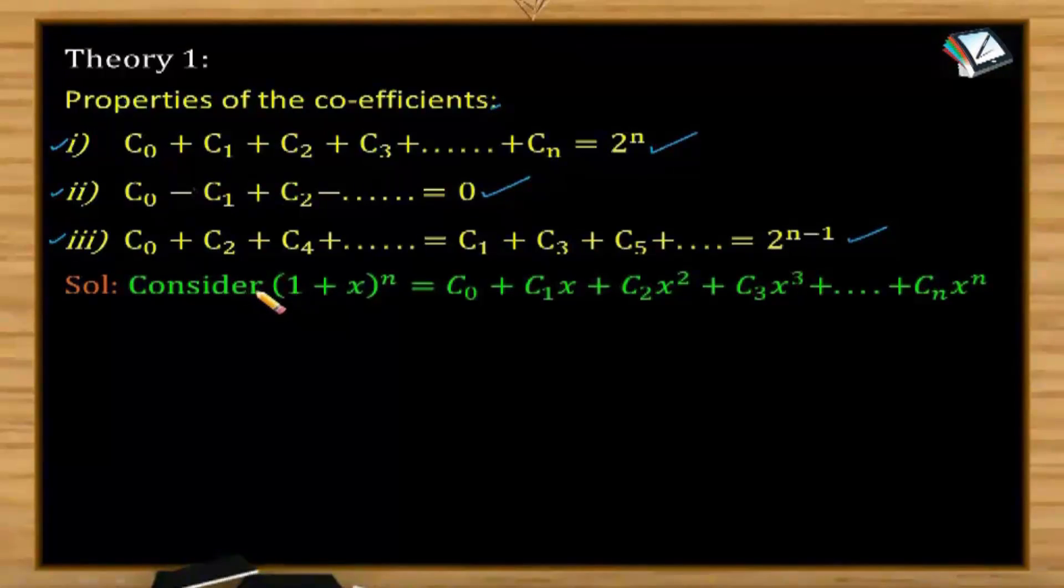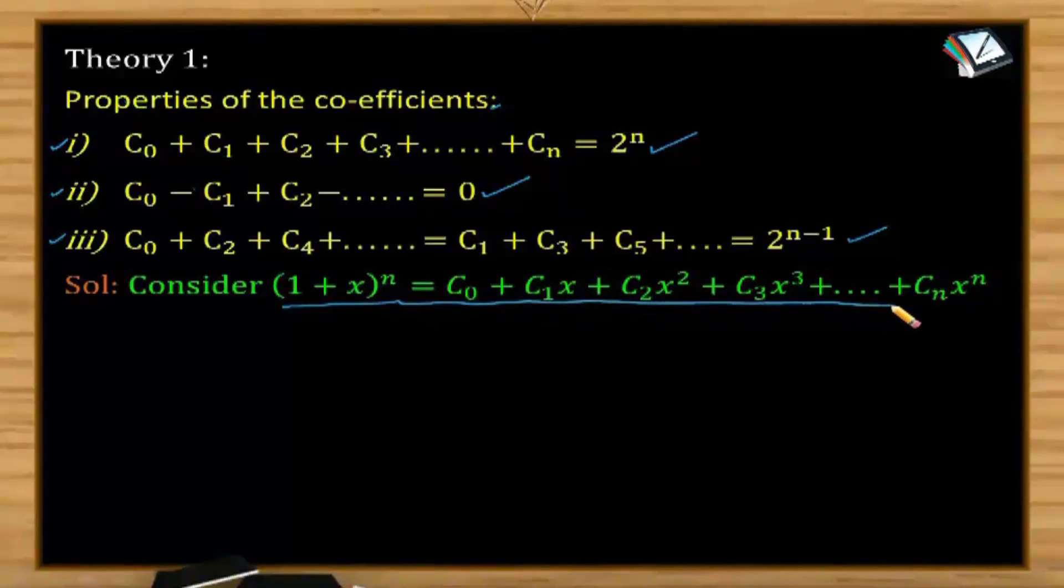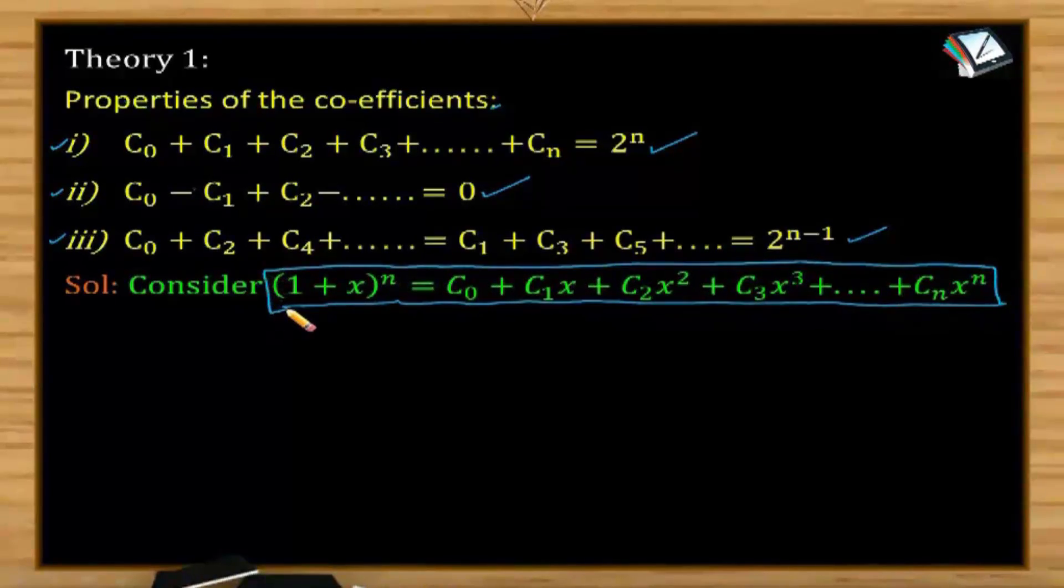For the sake, let us consider the expansion (1 plus x) to the power of n, which equals C0 plus C1x plus C2x square plus C3x cube plus so on up to plus Cnx power n. This expansion will be considered in proving the above properties.